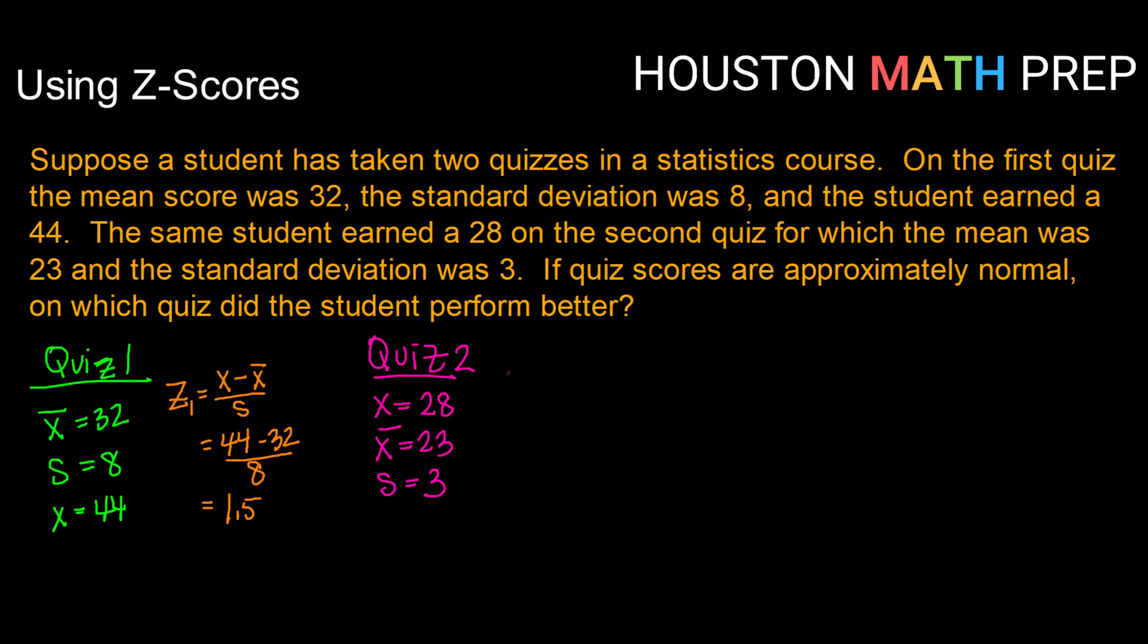Alright, let's do the same thing for quiz two and compare. So my z-score for quiz two will be my data value of 28 minus my mean value of 23 divided by my standard deviation of 3.